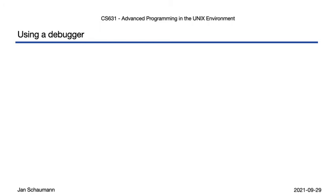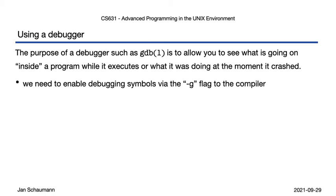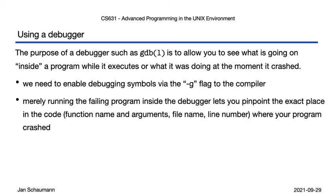Before we go on to debug our next program, let's quickly summarize what we've learned. In order to see what is going on inside a program while it executes, or what it was doing at the moment it crashed, we can use a debugger like gdb. To do that, we need to enable debugging symbols via the "-g" flag to the compiler. One of the killer features of a debugger is its ability to point you to the exact location in the code where it crashed — including the function name and its arguments, the file name, and the line number. You no longer have to guess or add printf statements. If your program segfaults, run it in the debugger and it'll tell you where the problem is.